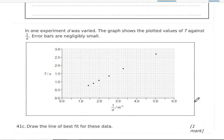Now in one experiment, D, the horizontal distance between the strings, the two strings, was varied. And the graph shows the plotted values T in second versus one over D in meter, in one over meter. So this is one over D. One over meter is meter to the power negative one or one over meter.